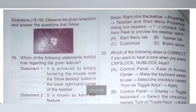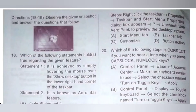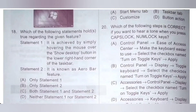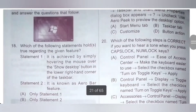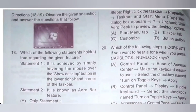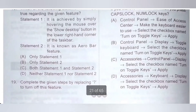Direction for questions 18 to 19: Observe the given snapshot and answer the questions that follow. Question 18: Which of the following statements hold true regarding the given feature? Statement 1: It is achieved by simply hovering the mouse over the show desktop button in the lower right hand corner of the taskbar — correct. Statement 2: It is known as arrow bar feature — incorrect; it is known as the Aero peak feature. Only statement 1 is correct. Option A is the correct answer.